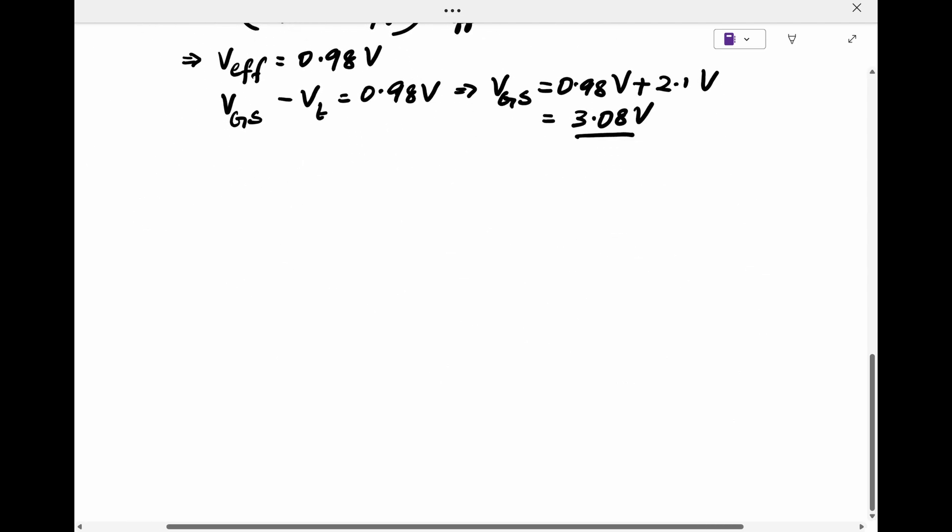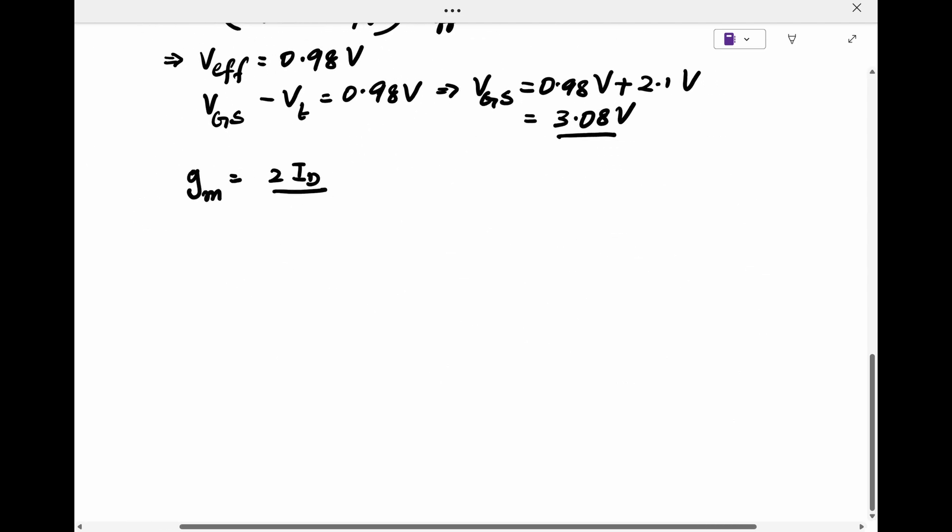GM is given by this equation, and substituting the values, we get 204.08 milliamps per volt.